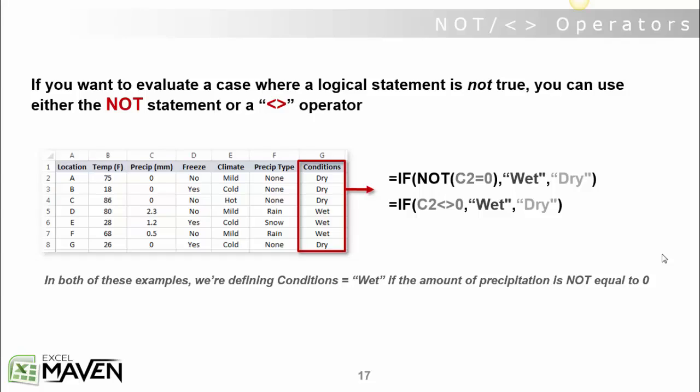AND and OR statements allow us to test whether conditions A and B are either both true or if one or the other is true. But what if we want to test if a condition is not true? In that case we have a tool called the NOT statement or using the not-equal-to operator.